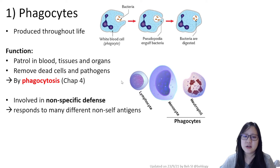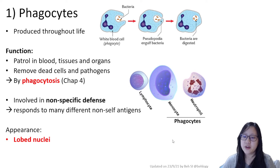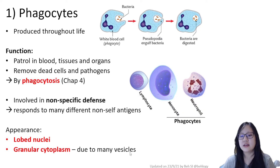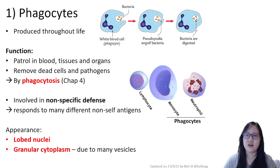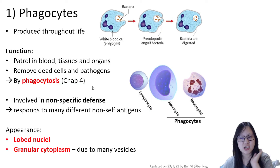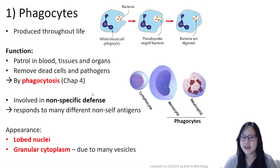The appearance of phagocytes is quite interesting: they all have a lobed nucleus and granular cytoplasm due to their many vesicles — a result of phagocytosis. They also have many lysosomes involved in this process, which was explained in the previous chapter.